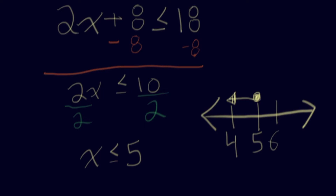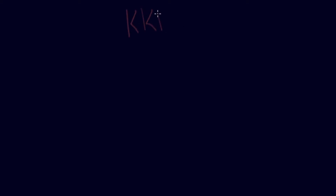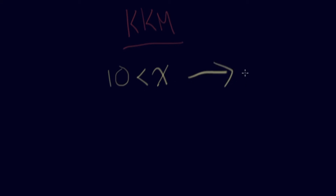Let's look at one common kid mistake. When you get something like 10 is less than X, a lot of kids see X on the right-hand side and just switch it around and write X is greater than 10 — but that's wrong. You've broken math rules by doing that.